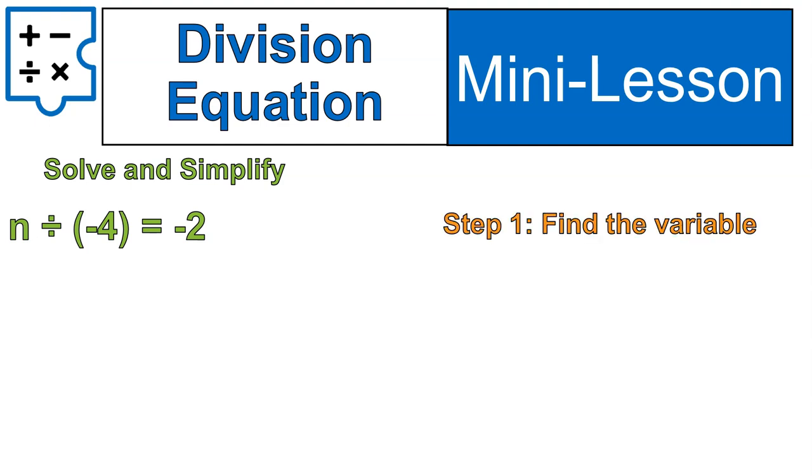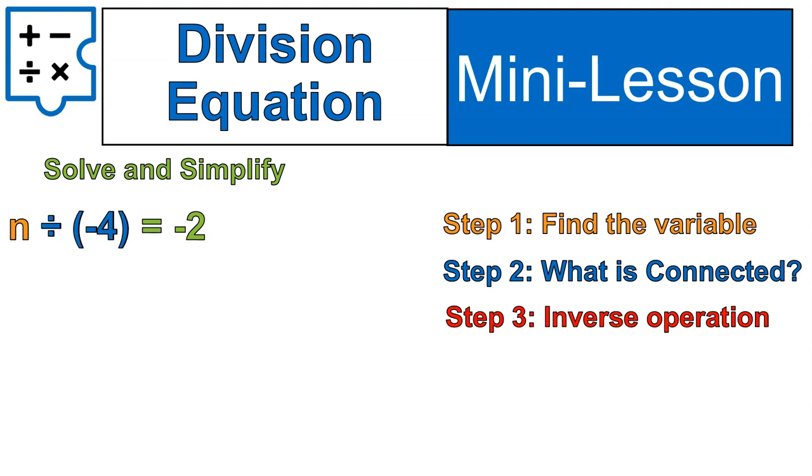All right. Let's try it out. Find our variable n. What's it connected to? Divided by negative 4. So I'm going to do the inverse. Let's open up the equation and put the inverse of divided by negative 4. That would be times negative 4.